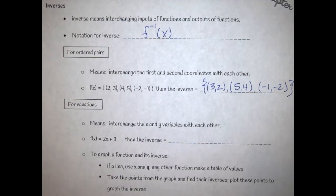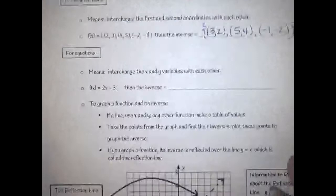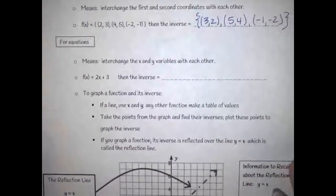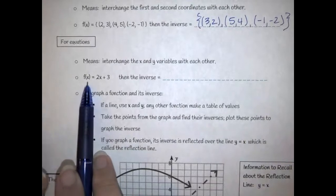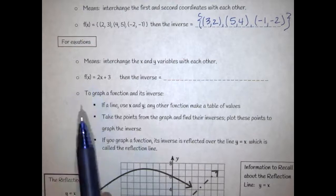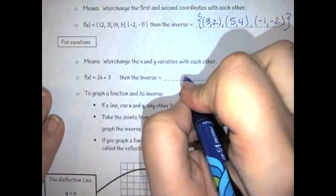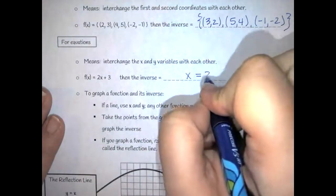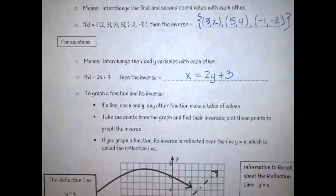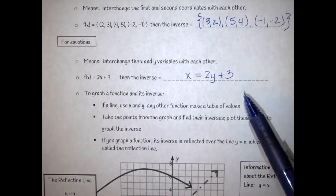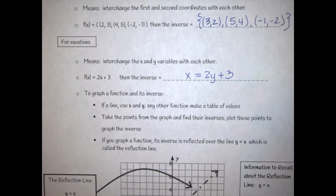For equations, the same idea occurs — you are going to interchange your x and y variables. So for example, if the function of x equals 2x plus 3, then your inverse equation is going to interchange x and y, becoming x equals 2y plus 3. Then in most cases you would either graph it as is, or re-solve for y to find your inverse equation.